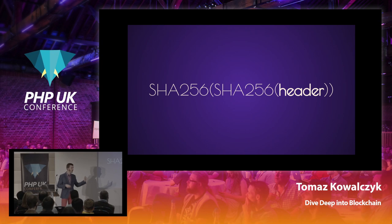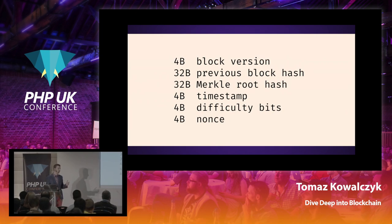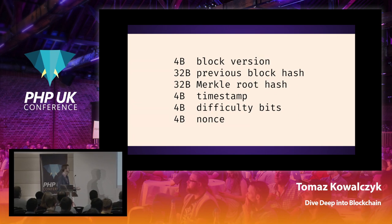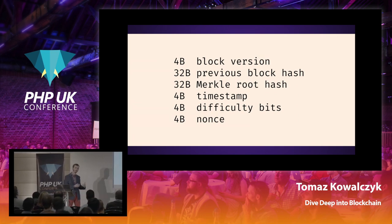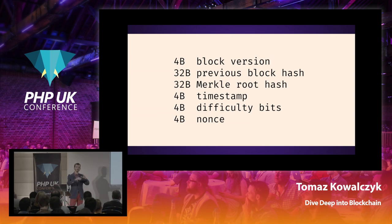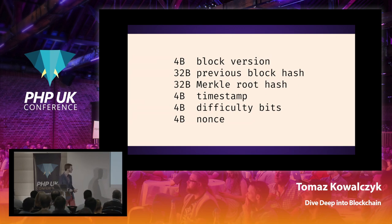The Bitcoin block header consists of several fields: four bytes for the block version, 32 bytes for the previous block hash — this is precisely where Bitcoin blockchain becomes a blockchain, because every next block contains a hash of the previous one — 32 bytes for the Merkle root hash, which is a hash of the contents of that block, then timestamp, difficulty bits, and nonce.